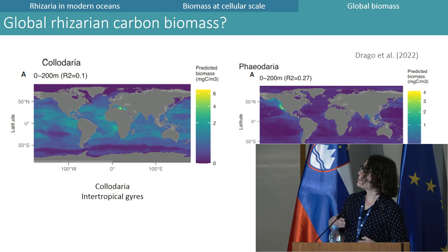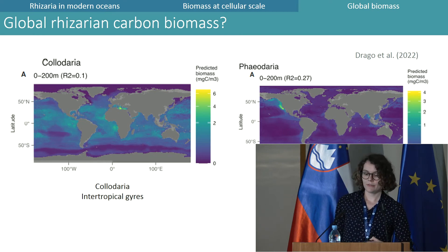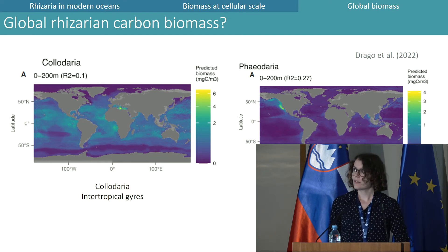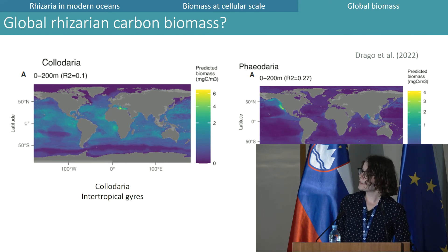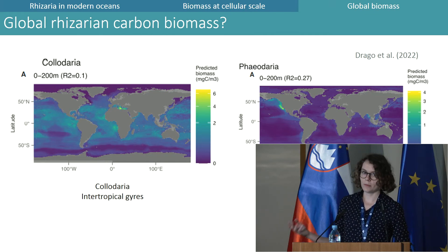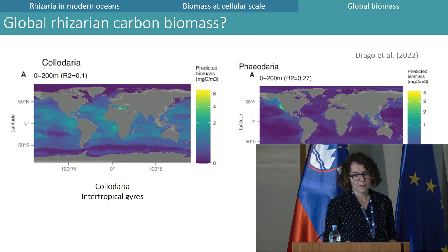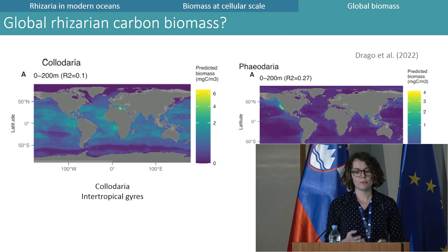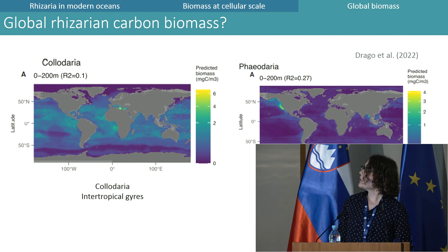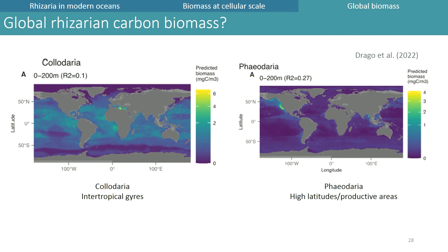The same global maps were made in a recent paper to predict carbon biomass, but with a different dataset and without the new allometries. From maps of the predicted Collodaria carbon biomass and the predicted Phaeodaria carbon biomass, we observe major discrepancies in distribution between the two taxa: Phaeodaria are present in productive areas at high and low latitudes, while Collodaria are present in the oligotrophic gyres. We can now wonder how these maps would change with the extended dataset and the new allometries.